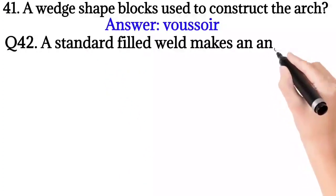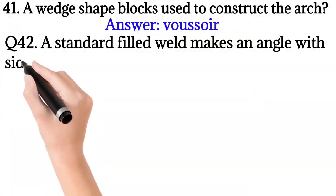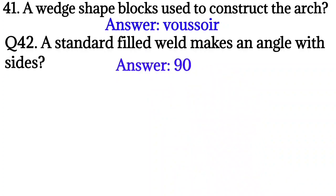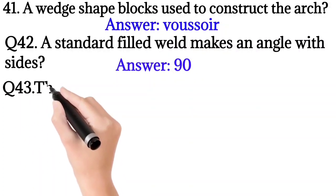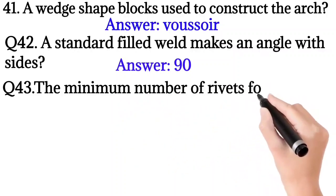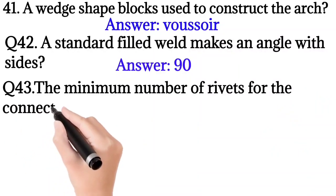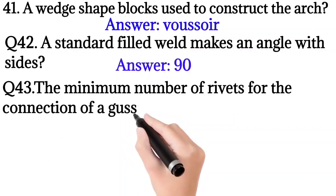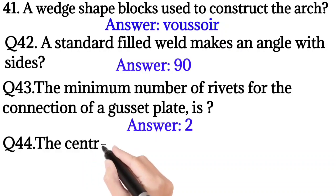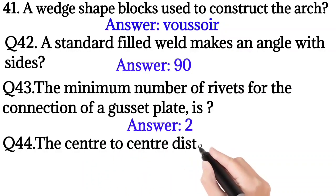So the answer is 90 degrees. Question number 43: The minimum number of rivets for the connection of a gusset plate? So the answer is 2. Question number 44: The center to center distance between two consecutive rivets in a row is called?